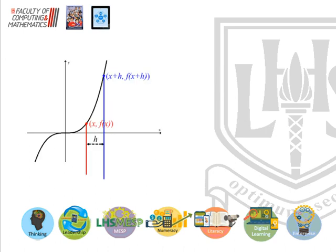Here's the background to where differentiation came from. You've already met finding the gradient of a straight line using the formula (y2 − y1) / (x2 − x1). A couple of mathematicians tried to get an estimation for the gradient of a tangent to a curve, where the gradient changes as you move along.